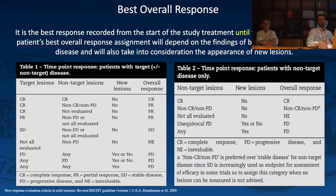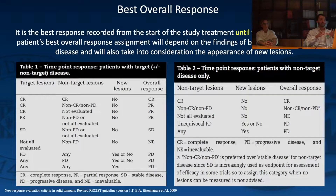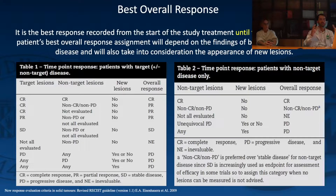The best overall response is the best response recorded across the entire study. After the baseline, follow-up is typically performed between 6 and 12 weeks. For example, if the target lesion shows partial response and the non-target lesion shows stable disease, the best overall response is partial response. This assessment continues until the end of the study.